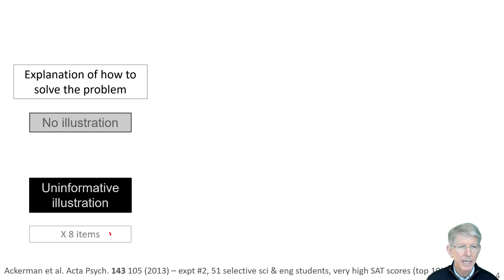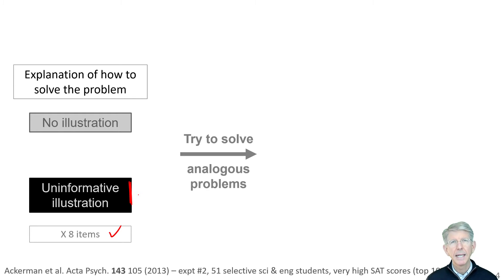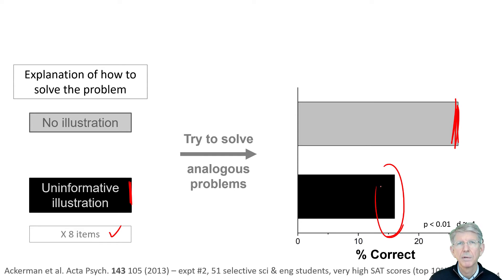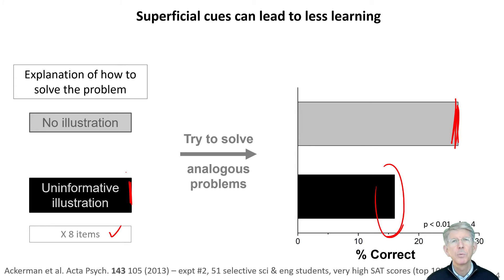Remember, there are eight of these items. They were given explanations for these difficult problems — some had no illustration, some had the uninformative illustration. Now we're going to give them new analogous, very difficult problems and look at their performance. The students who did not receive the uninformative illustration did distinctly better than the students who had uninformative illustrations. Somehow, this uninformative information interfered with their ability to understand the actual solutions. The concept here is that superficial cues can lead to less learning.